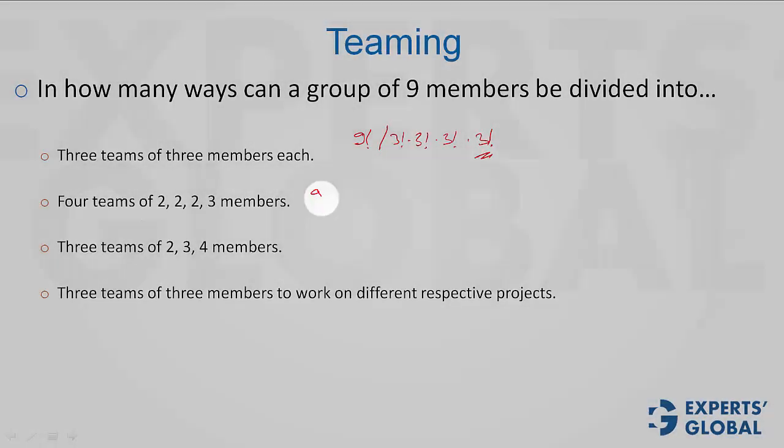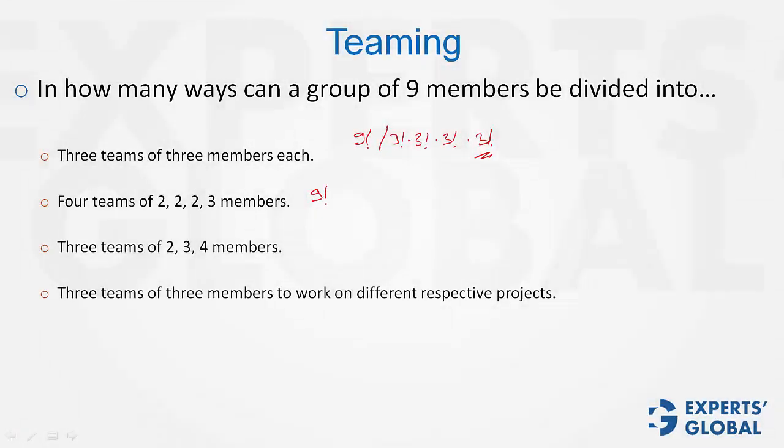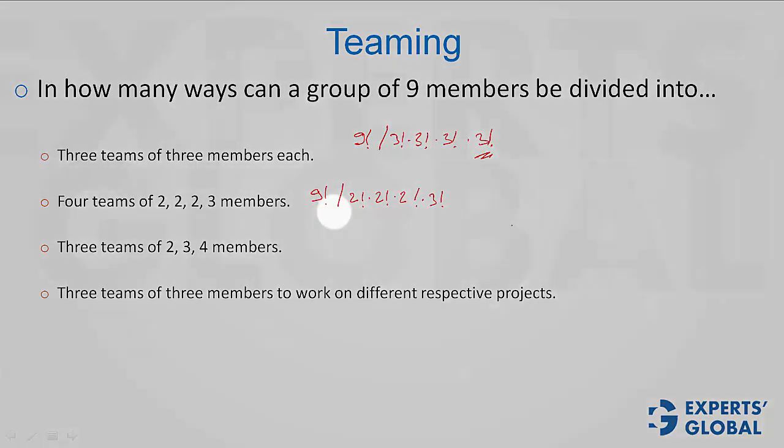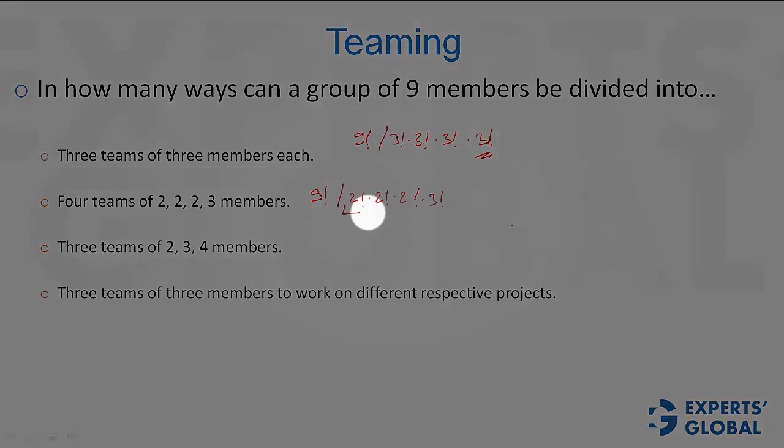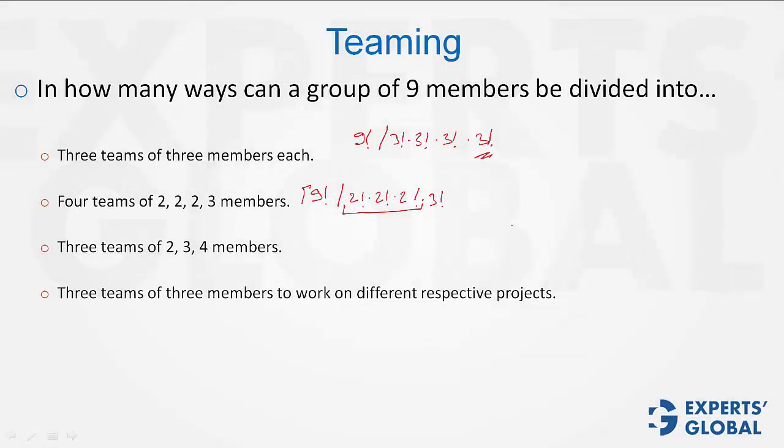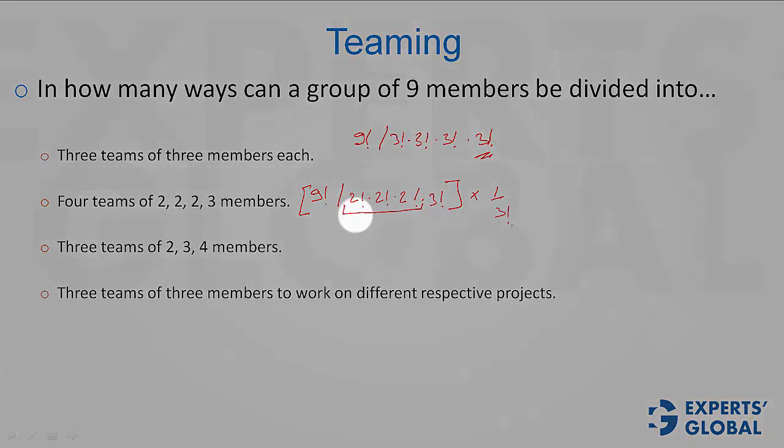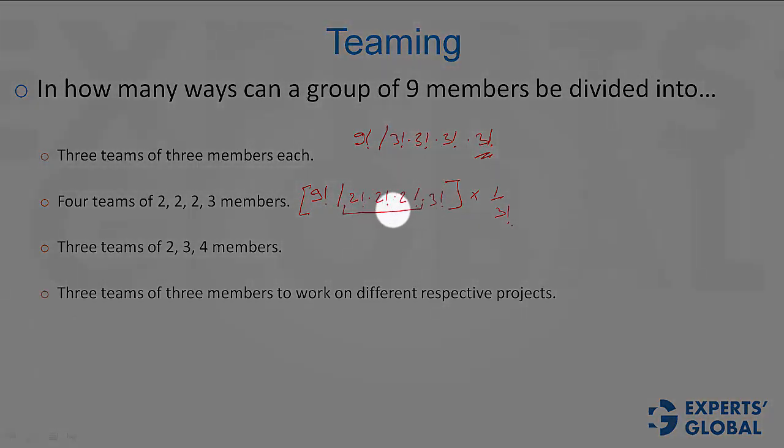Look at this one now, 9 factorial divided by 2 factorial, 2 factorial, 2 factorial, 3 factorial. But then again, out of these 4 teams, 3 are identical. So we need to divide this entire expression by another 3 factorial. Why? Because out of these 4 teams, 3 are identical. If all 4 were identical, then we would have divided the entire value by 4 factorial.